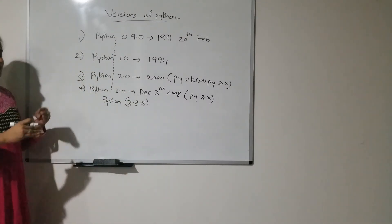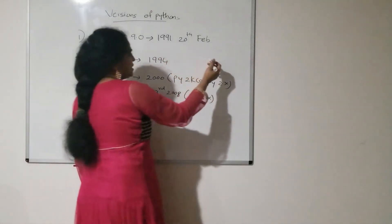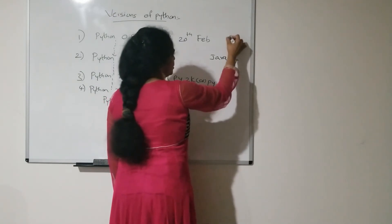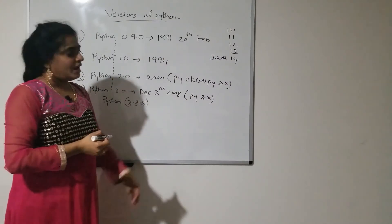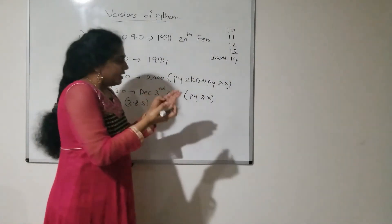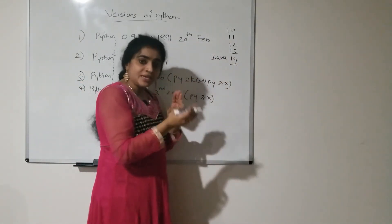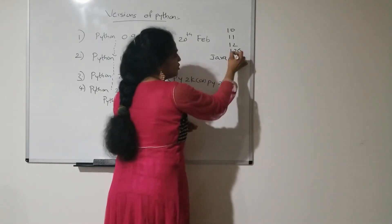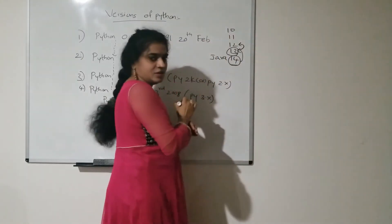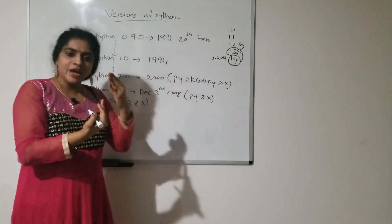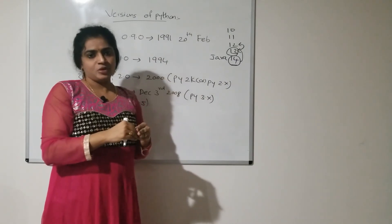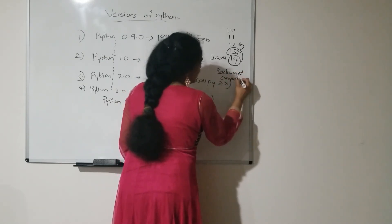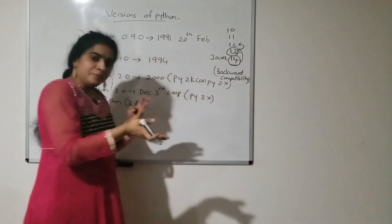If you consider Java, the present Java version is Java 14. Before that, Java 13, Java 12, Java 11, Java 10 — several Java versions are there, and the present version is Java 14. In Java, if they release a new version, they have to make sure they provide support to the previous versions. Java 14 has to provide support to Java 13, and Java 13 has to provide support to Java 12. For each new version, they have to provide support to the previous old versions. That process is called backward compatibility — providing support to the previous versions.